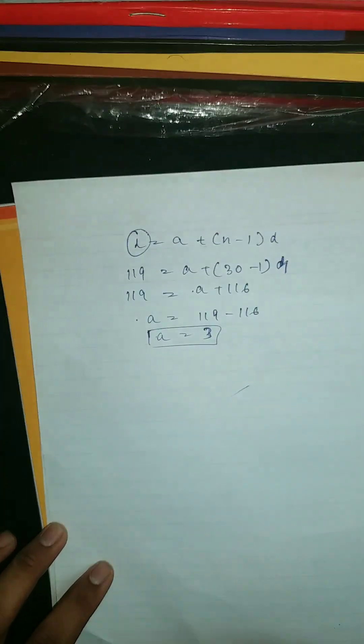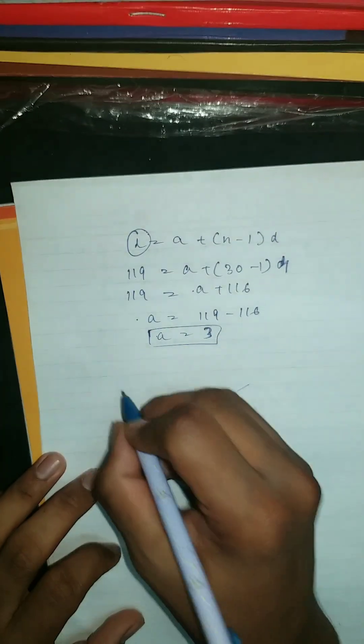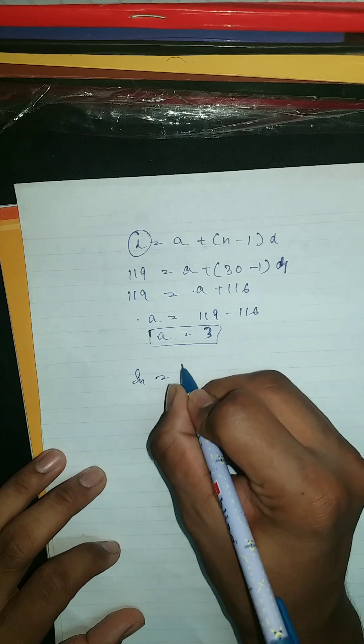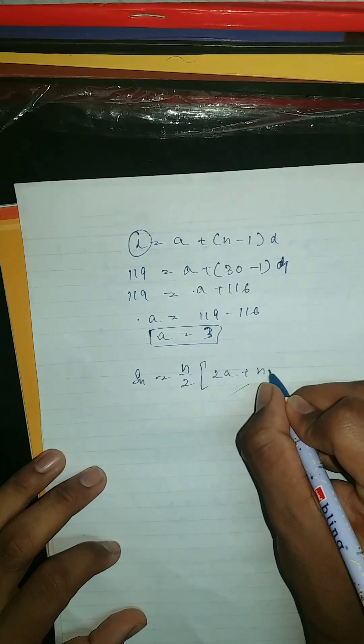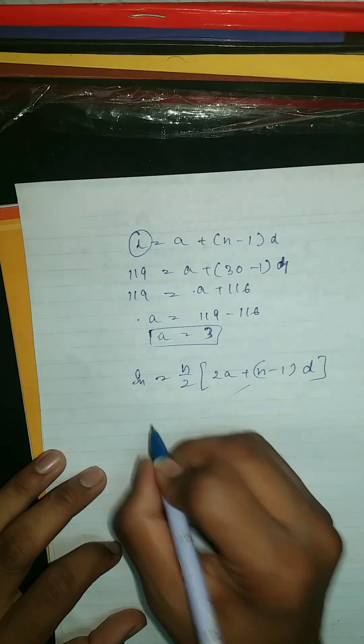We have to find SN. We got A, now to find SN, that's the question. SN equal to (n/2) times [2A plus (n-1)D].